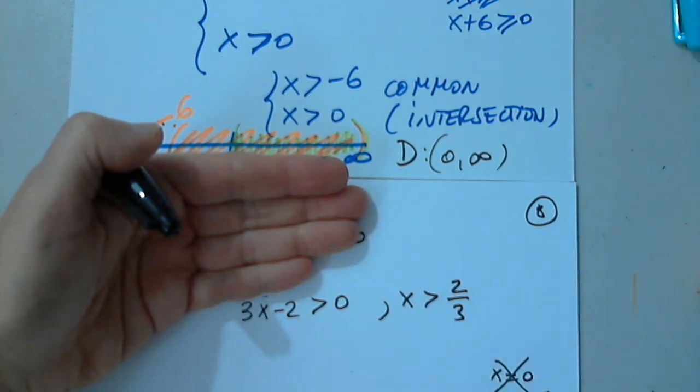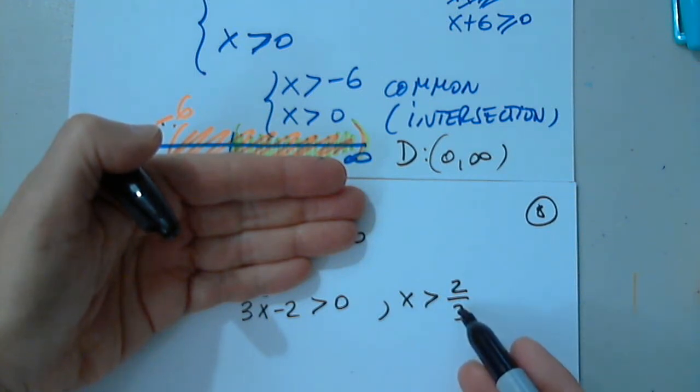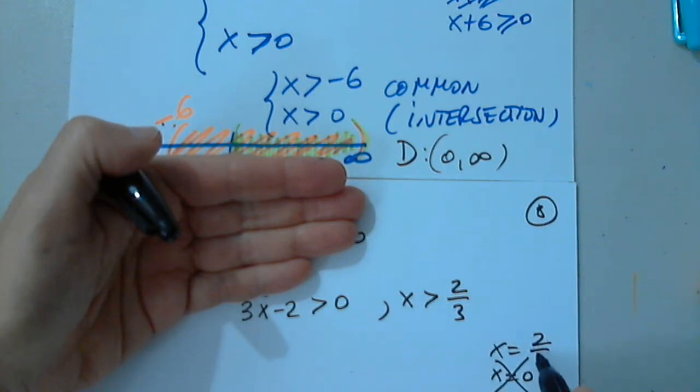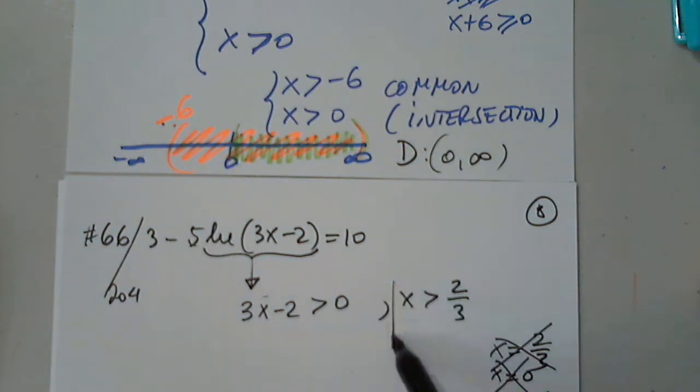So I don't know, I'm making numbers up, of course. If I get x equals 7, I'll say okay. But if I get 0 or negative 10 or even 2 thirds, I'll say no way. Okay? That's the purpose of this.